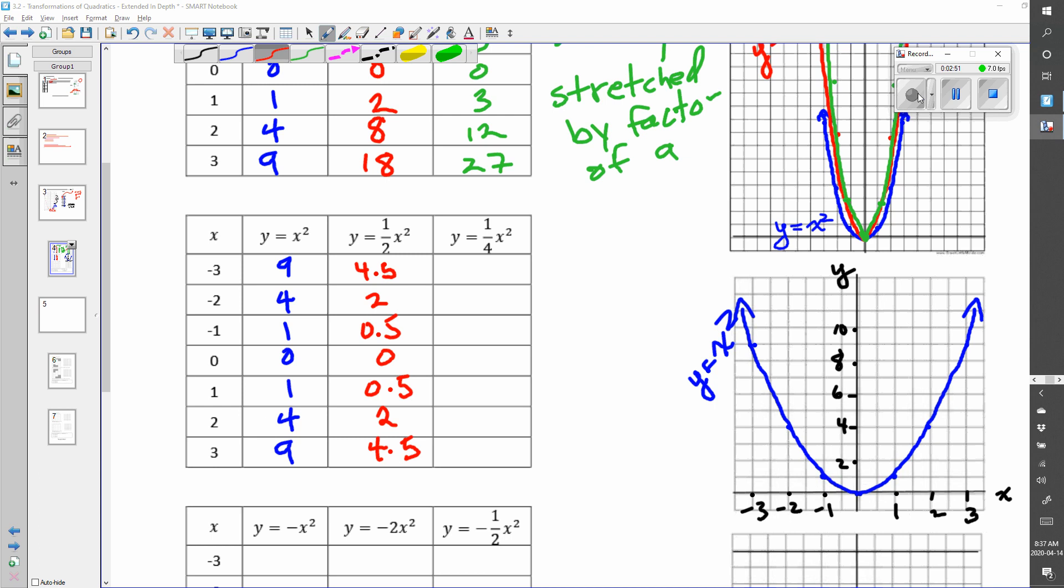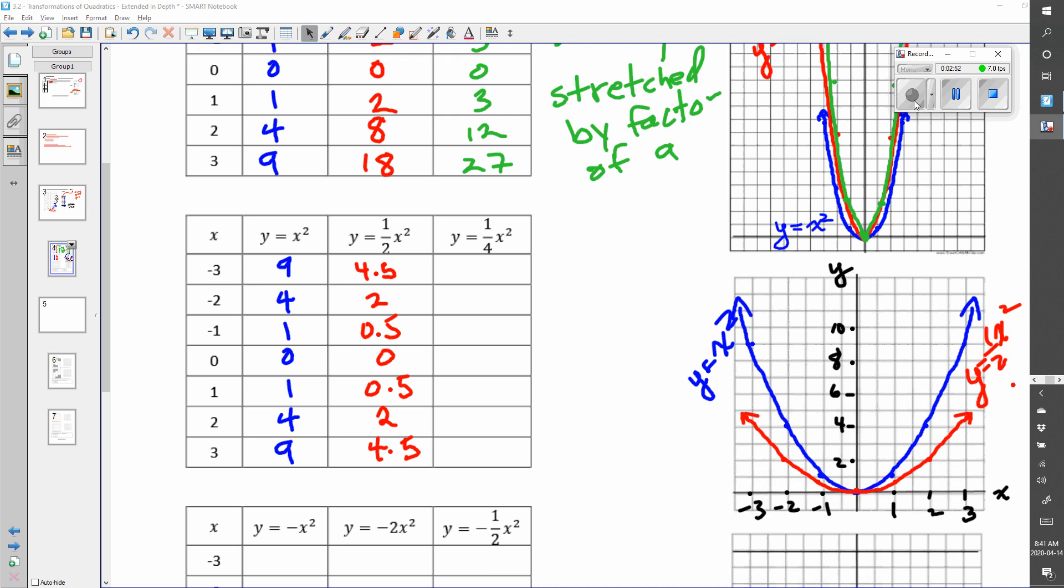Now, graph those points. And when you graph your new parabola, you're going to get something like this. Essentially, what's happened is when we multiply, when we have 1 half sitting in front of x squared, essentially, the heights get cut down by 1 half.